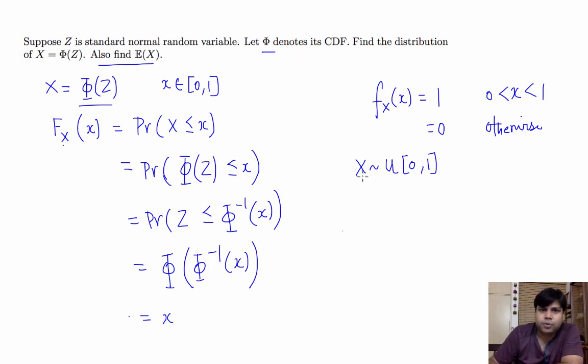So we have found the distribution of X, and we can easily find the expectation of X by integrating from 0 to 1, x times the density which is 1. So what are we going to get? We are going to get half. That's how we can find the expectation of X. Thank you.